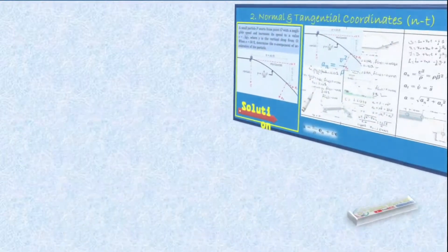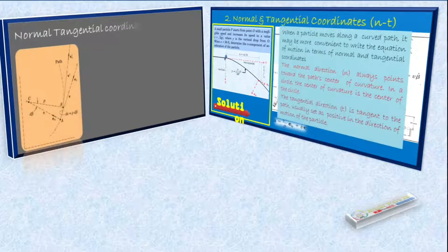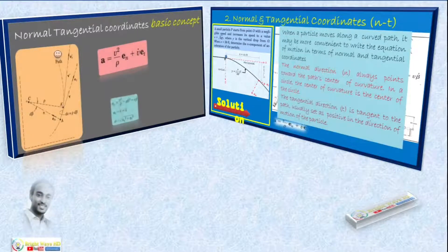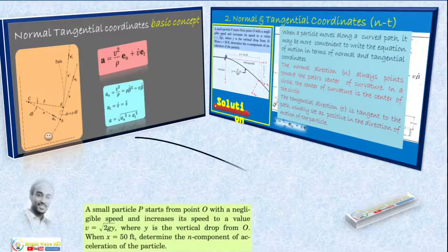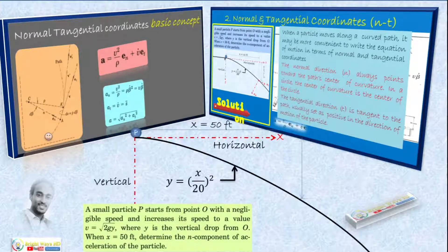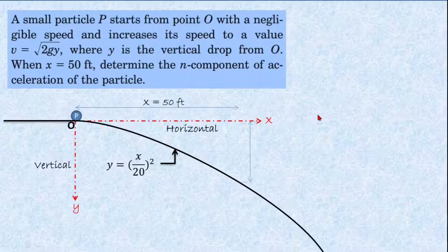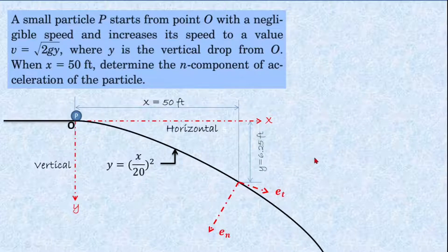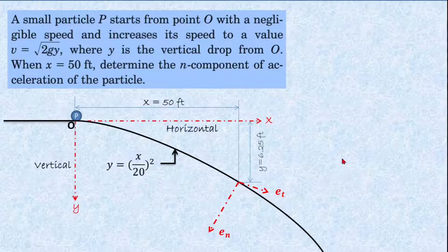In this video we'll discuss a problem related to kinematics of a particle, which could be solved by using a normal and tangential coordinate system. The problem states that a small particle starts from a point with negligible speed and increases its speed to a value v = √(2gy), where y is the vertical drop from that point. When x equals 50 feet, we need to determine the normal and tangential components of the acceleration.